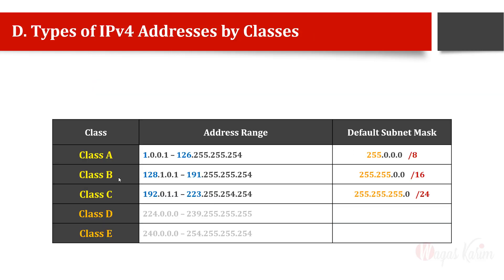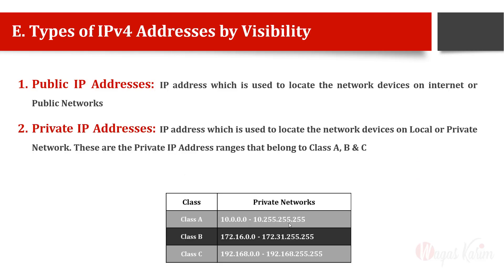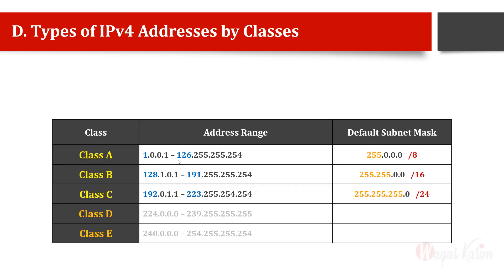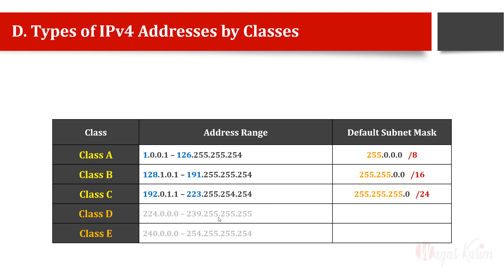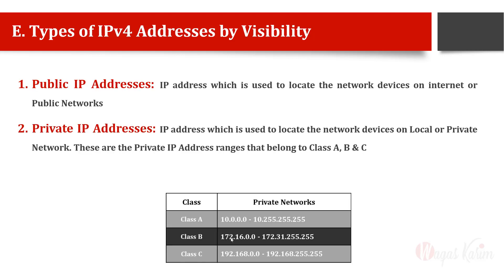There are private IP address ranges for classes A, B, and C. For Class A, the full range starts from 1 up to 126 in the first octet, but only 10.0.0.x is reserved as private — the rest are public. For Class B, only the range 172.16.x.x up to 172.31.x.x is private. For Class C, 192.168.x.x is private — this is the most common range seen in homes and offices. The second most common private range is 10.x.x.x.